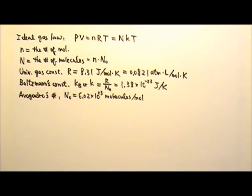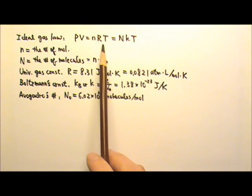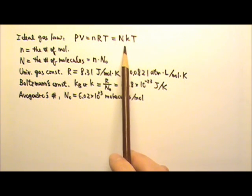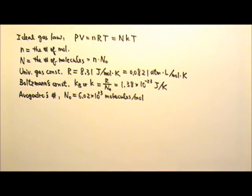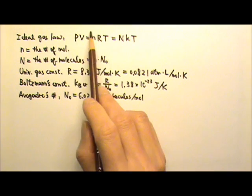Now let's look at the ideal gas law. PV equals nRT equals NKT. At low enough densities, all real gases tend to obey the ideal gas law. In chemistry, you use PV equals nRT.